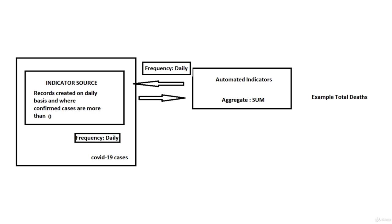In Performance Analytics, we have what we call an indicator source. That's very simple - it is a filtered data source. We have our COVID-19 cases table, and on that table we can create an indicator source, which is actually a filtered dataset.